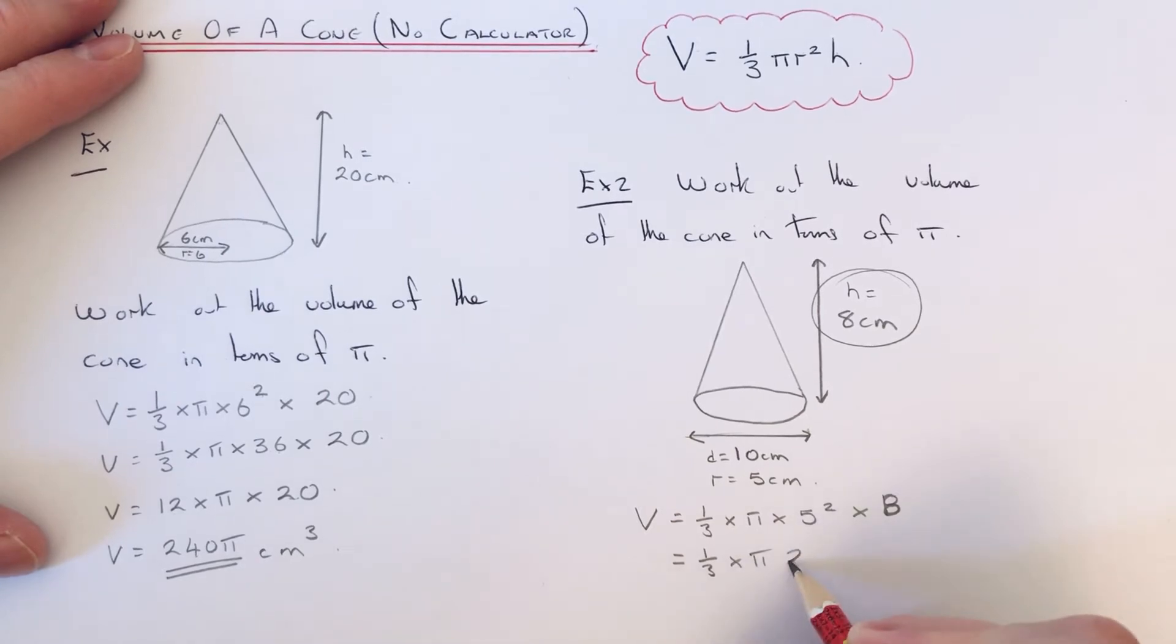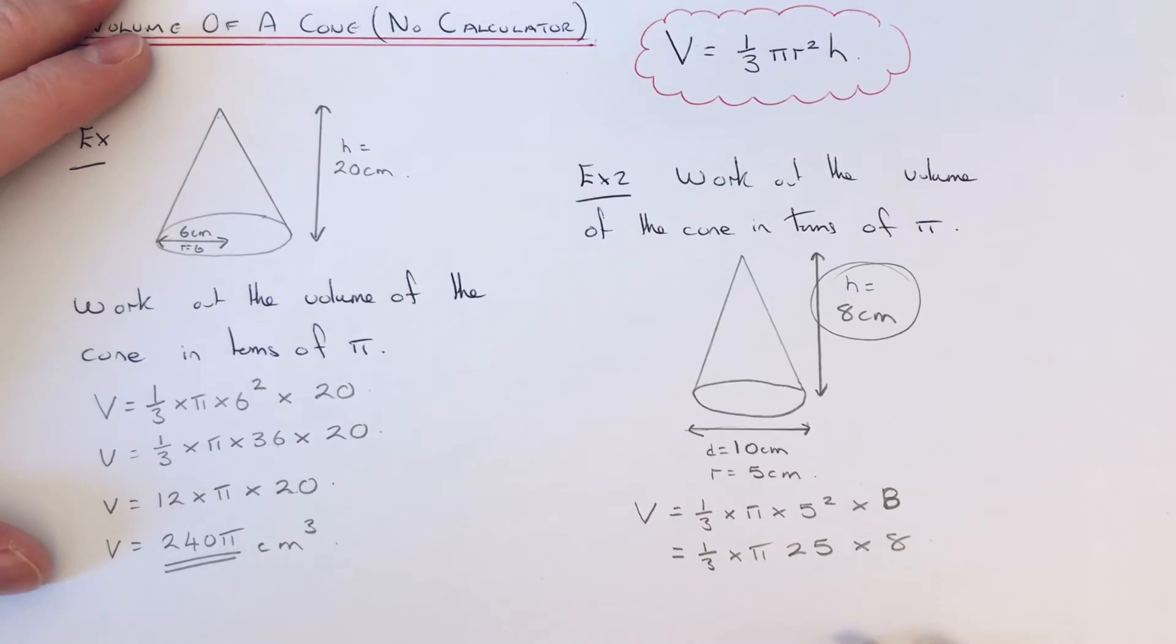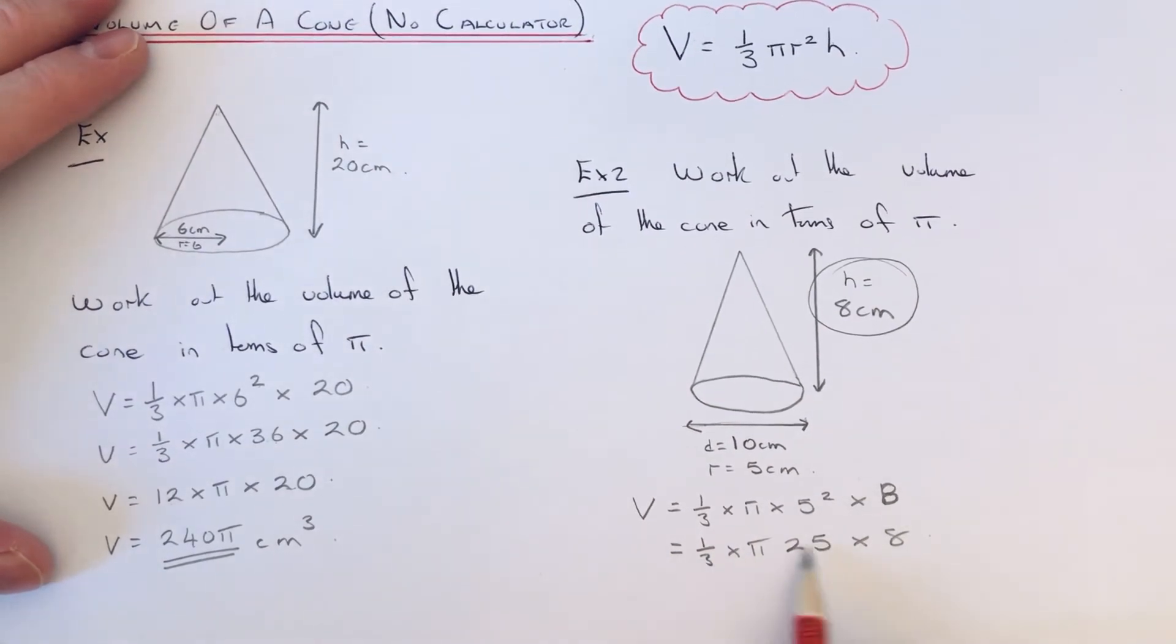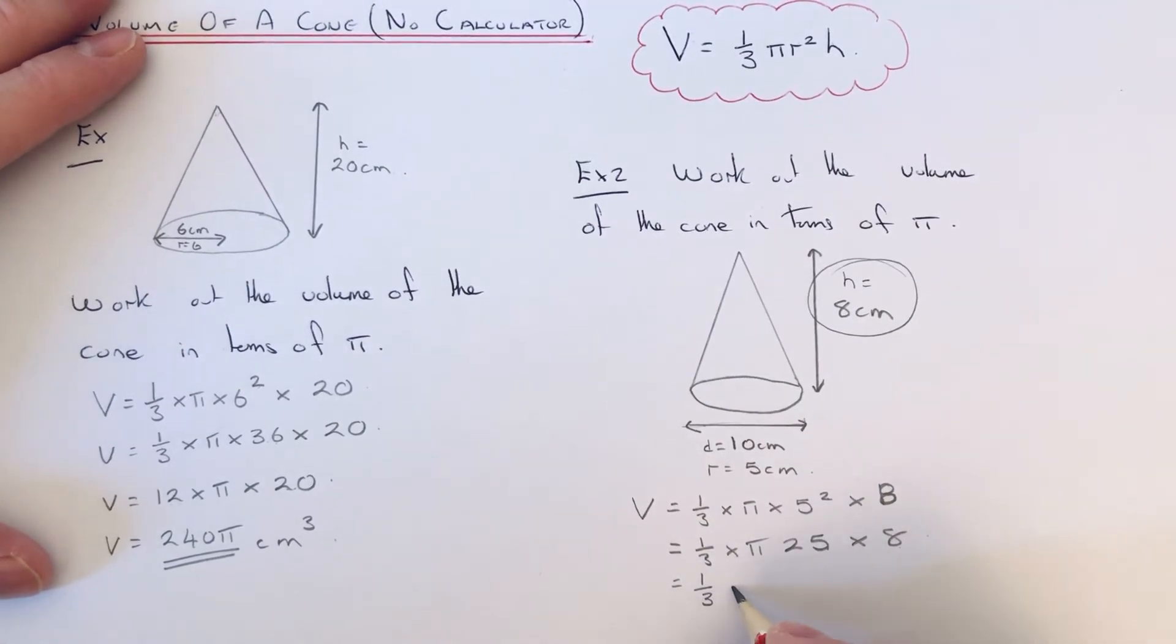So 5 squared is 25. Okay, so this time I'm not going to do one third of 25 because it's going to come out as a decimal. So I'm going to multiply 25 by 8 first of all. So 8 times 25 is 200.